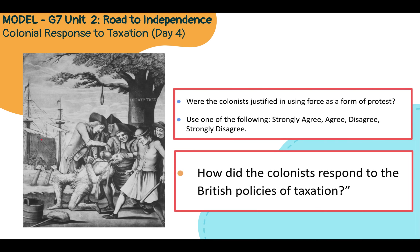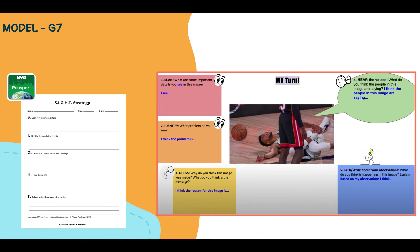Prior to having students work on the CITE strategy on their own, I like to model how to use the strategy before they start working independently. I would use a familiar image from a prior unit and center it in the middle, adding the element of I do, we do, you do. I'd answer questions one and two by modeling the thinking, since these are lower-level questions. Then I'd work along with my students to solicit answers for questions three and four, which require them to develop an inference or show their understanding of what is going on in the image.